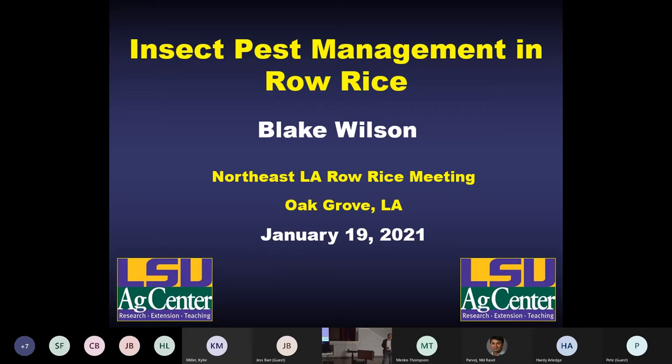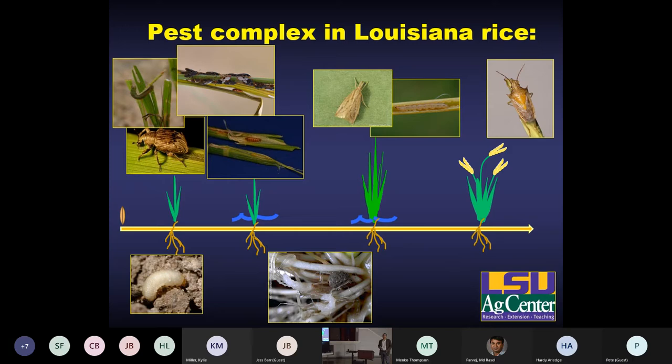I'll go over some special considerations about managing insect pests in row rice. We have a really diverse assemblage of different insects that attack rice throughout the growing season. Several of these are directly influenced by the presence of a flood. A lot of our early season pests like army worms and chinch bugs are really only a pest before you put that flood on. Those tend to decrease in importance after permanent flood is established, same thing with Colaspis. All these insects are not aquatic, so the flooded environment is not really habitable for them.